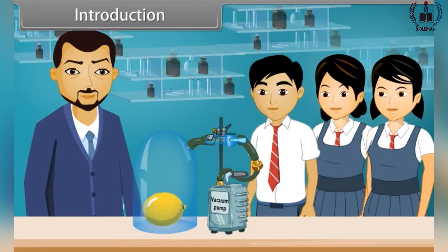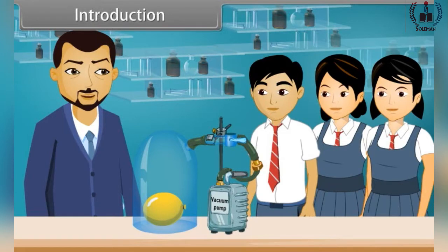One student curiously asks: 'Sir, will you please explain how this process works?' The teacher replies: 'Sure, Varun. This is an example of kinetic theory. When the vacuum is turned on, the pressure exerted on the balloon decreases and the balloon can expand until the vacuum jar is completely filled. When the air is allowed back in the jar, the pressure is re-established and the balloon returns to its original volume.'